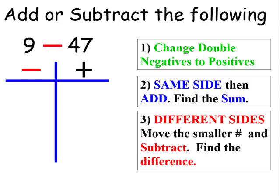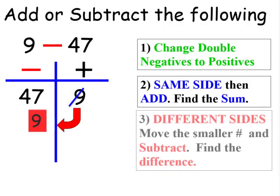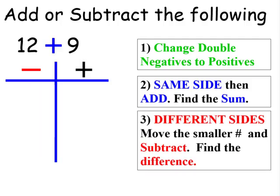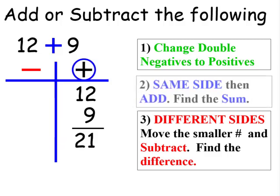So let's take a look at 9 minus 47. 9 is positive, so it goes on the positive side. 47 is negative, so it goes on the negative side. Since they're on different sides, we'll move the smaller number over and subtract. 7 is smaller than 9, so we borrow 1 from the 4, making it 10. 10 plus 7 is 17. 17 minus 9 is 8. 3 minus 0 is 3. But remember, we're on the negative side, so the answer is negative 38. Next: 12 plus 9. 12 is positive as well as 9. Since they're on the same side, we add, and since it's underneath the positive side, it stays positive 21.